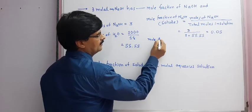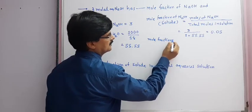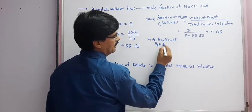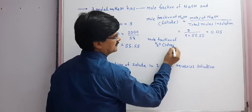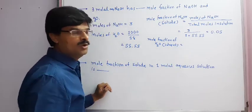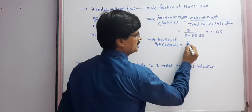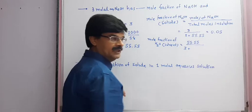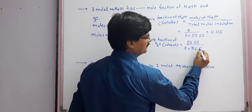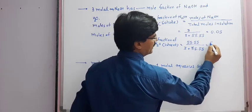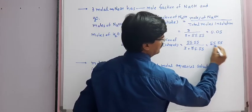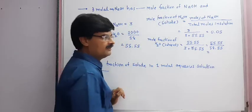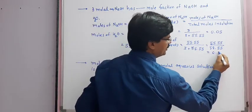Same way, mole fraction of water (solvent) equals moles of water divided by total moles: 55.55 divided by (3 plus 55.55), which is 55.55 divided by 58.55. The answer will be approximately 0.95.